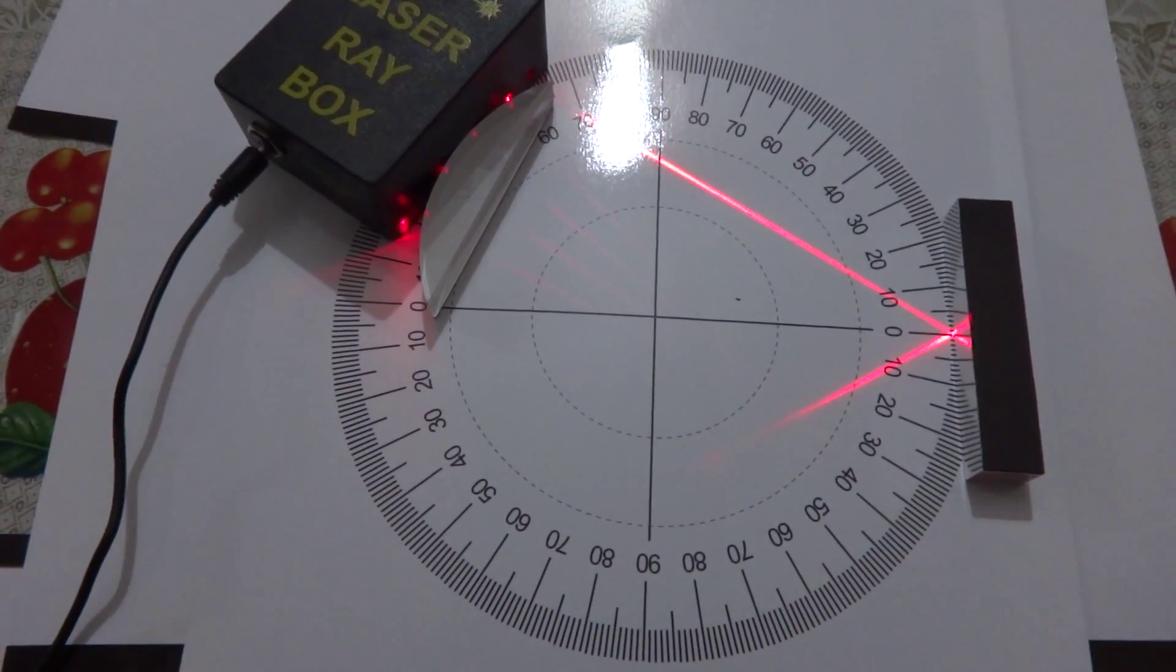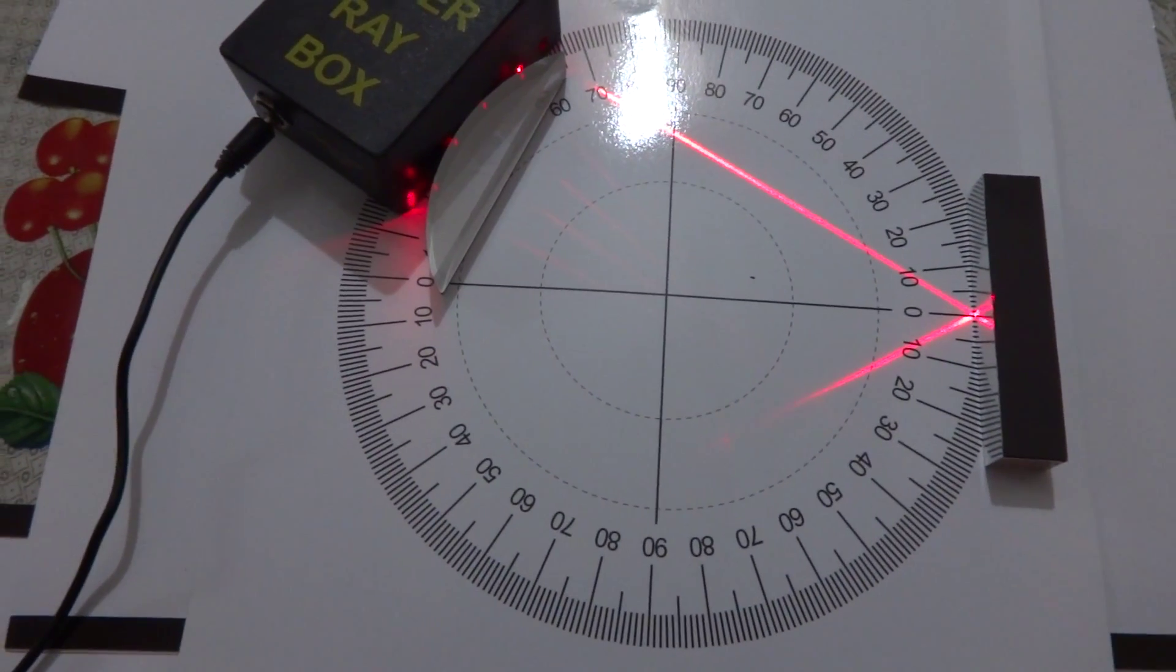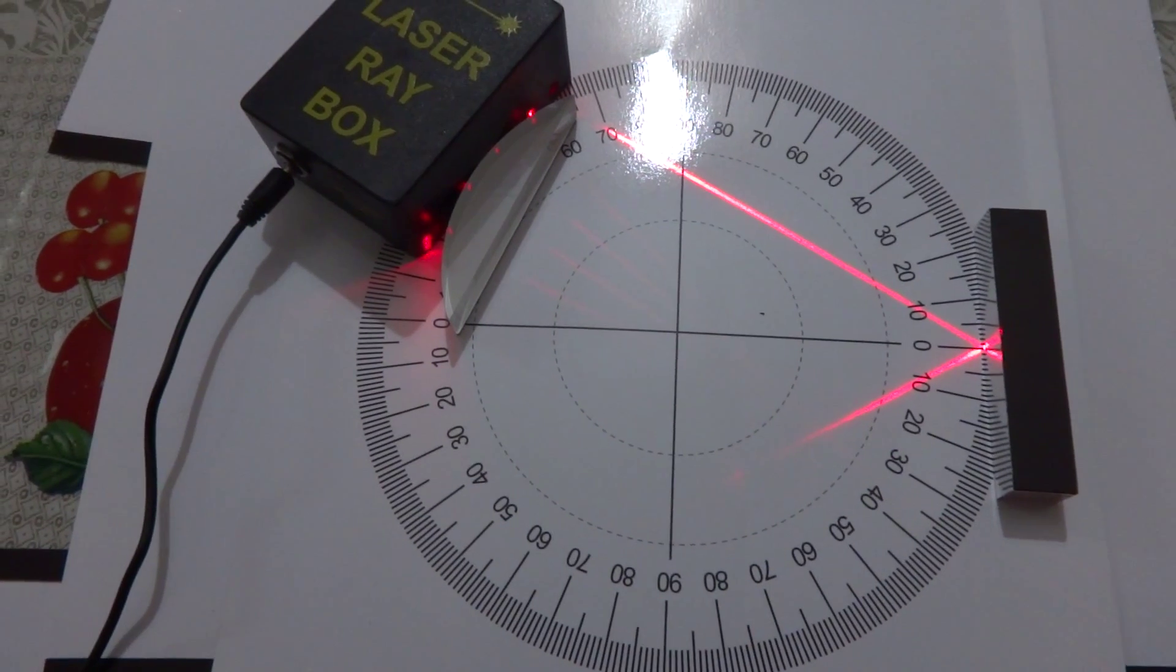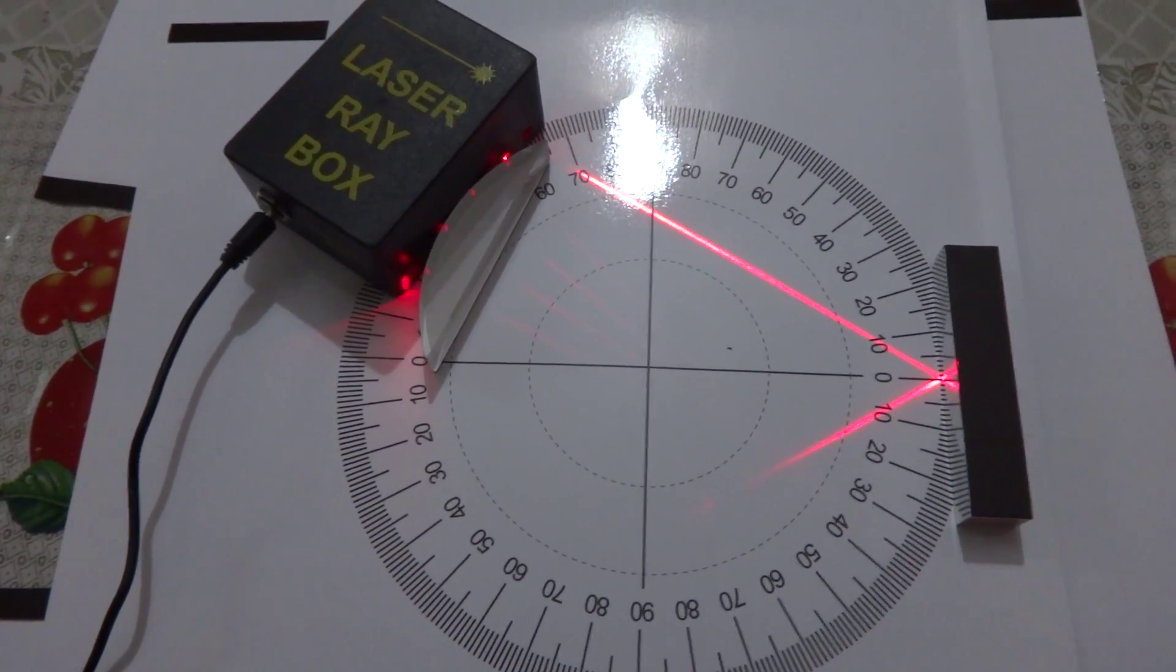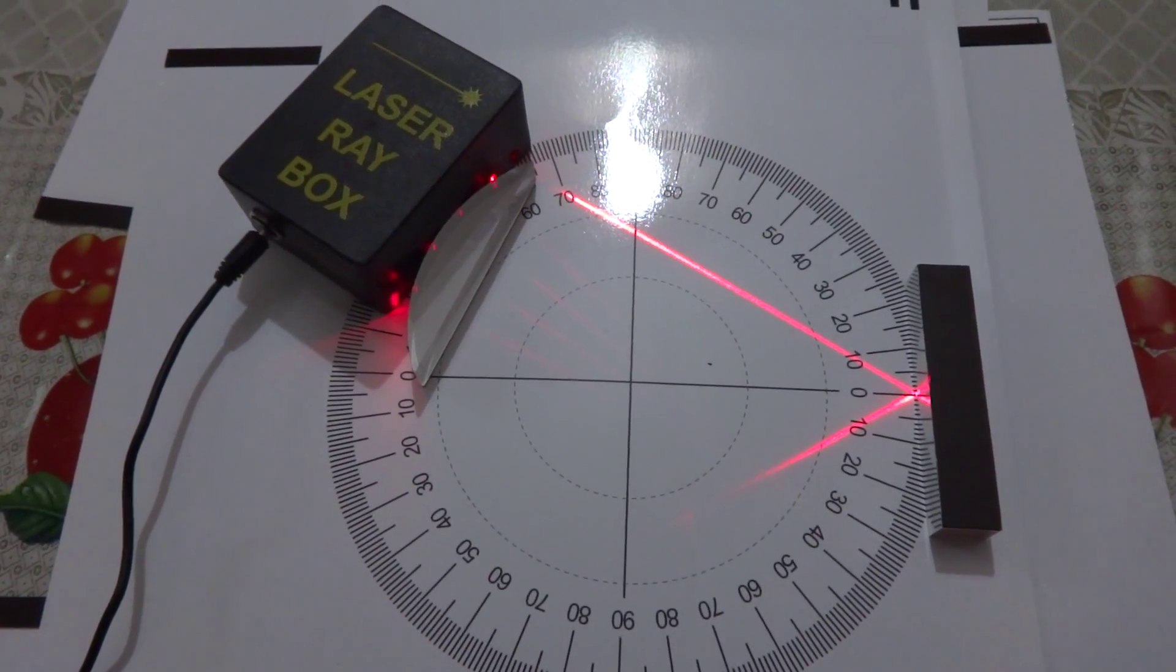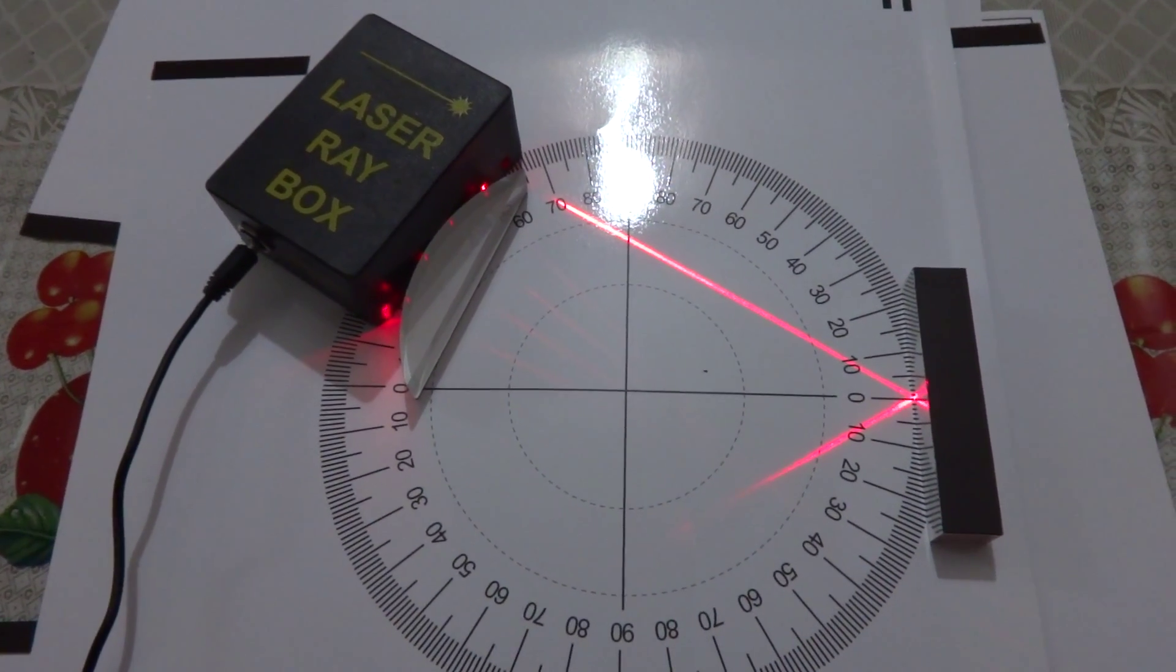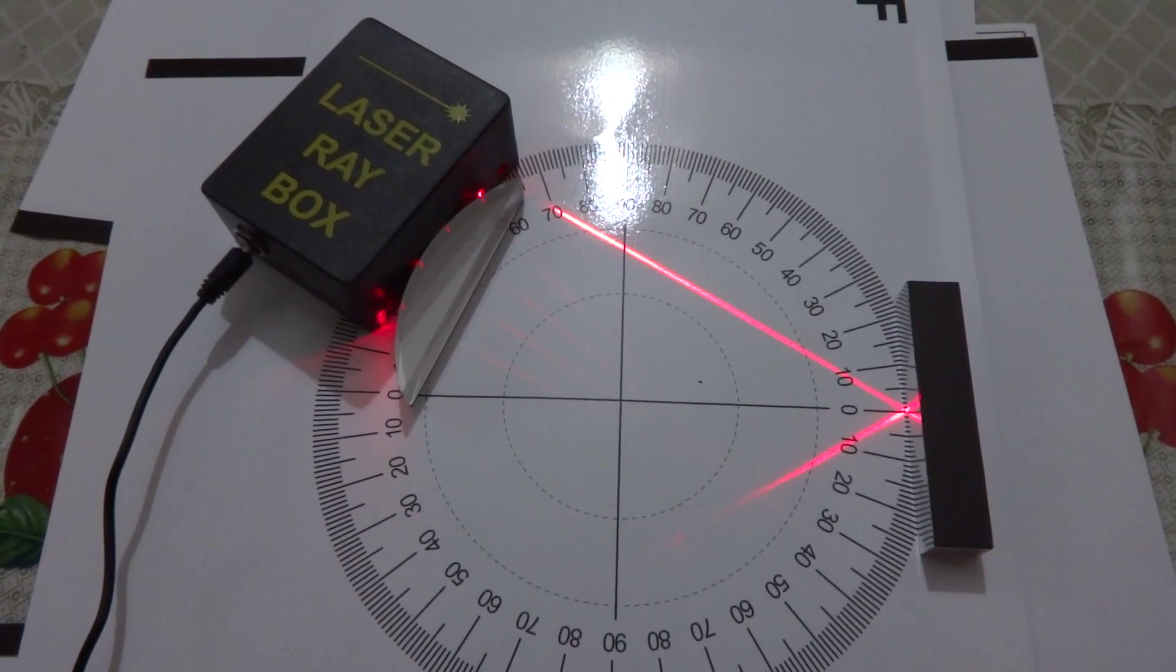Let's now observe the reflection through three different types of mirrors. Mirrors can be classified into two: plane mirrors and spherical mirrors.